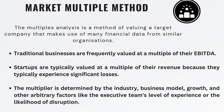Traditional businesses are frequently valued at a multiple of their EBITDA, so EBITDA could be compared between similar companies. For example, if two similar companies are compared and one company has a valuation of five times its EBITDA, that gives an indication that the valuation of the other company could also be around five times its EBITDA.